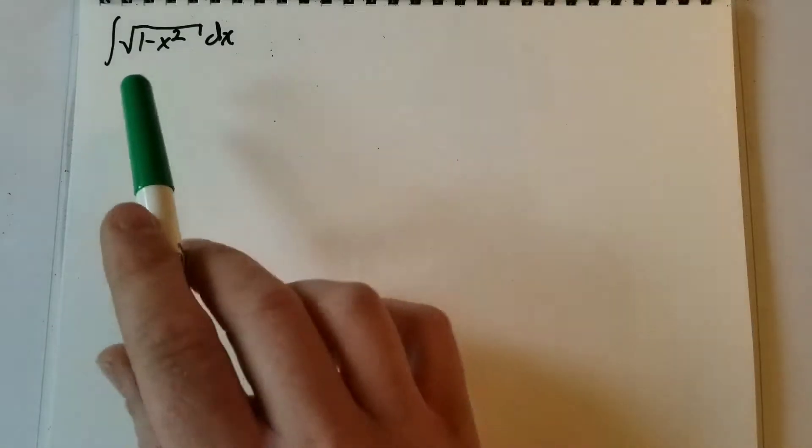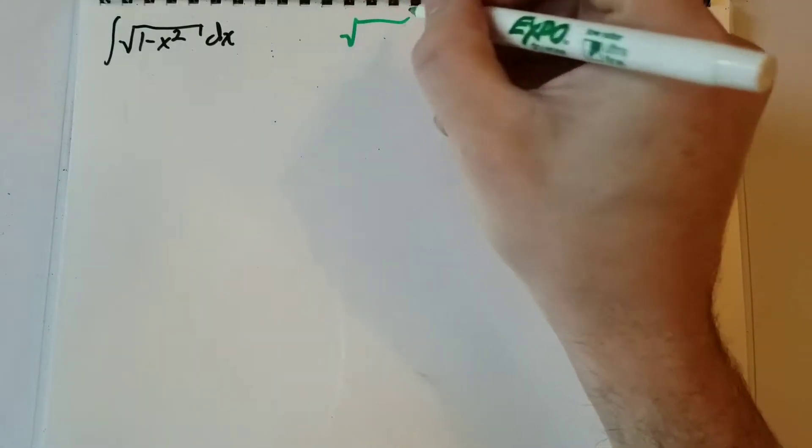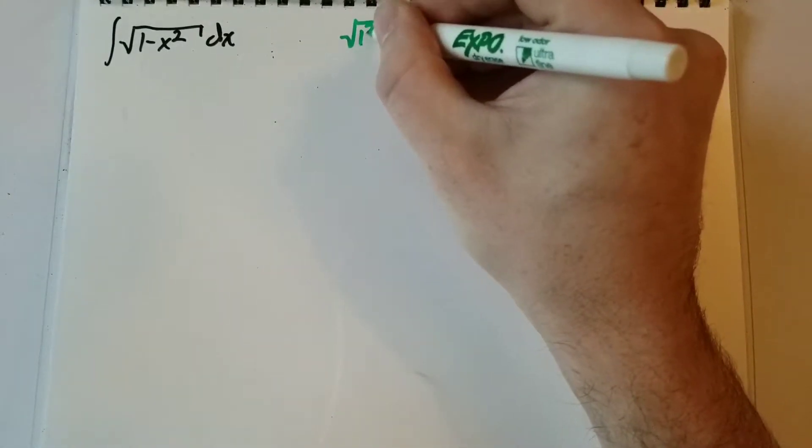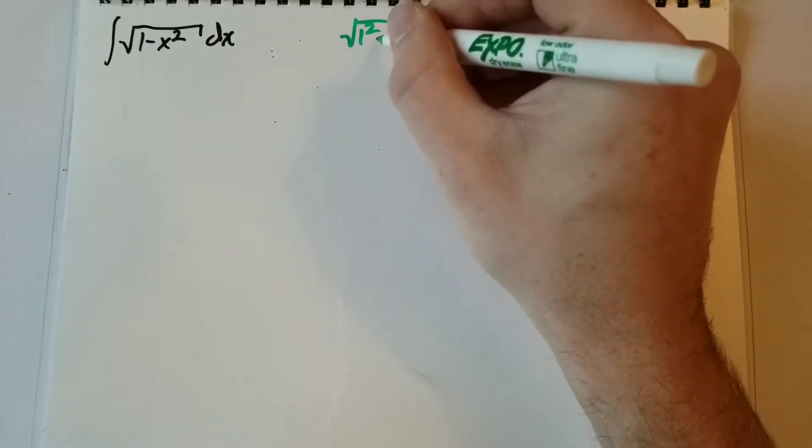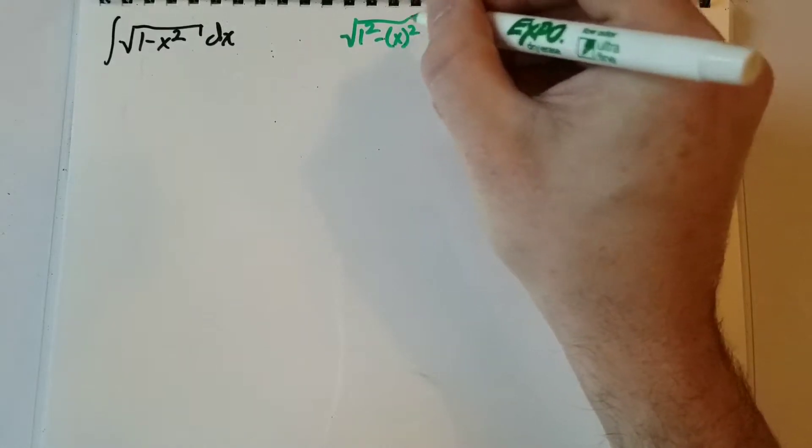This integral is the square root of 1 minus x squared, and this is going to involve trig substitution. When we see the square root of 1 minus x squared, we can rewrite it as 1 squared minus x squared.